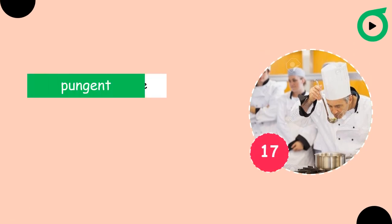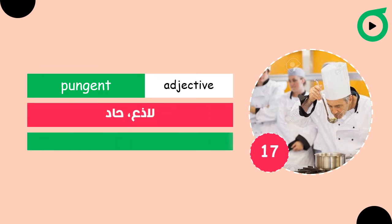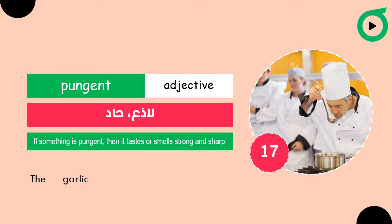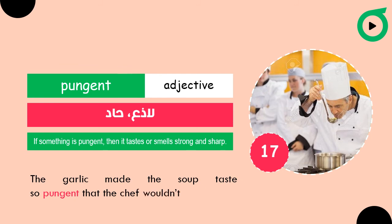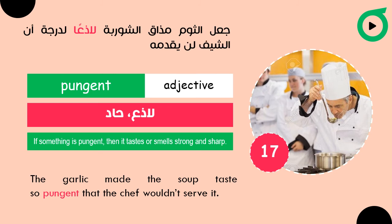Pungent. If something is pungent, then it tastes or smells strong and sharp. The garlic made the soup taste so pungent that the chef wouldn't serve it.